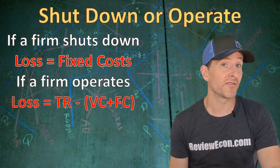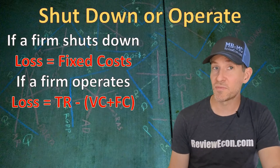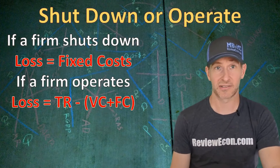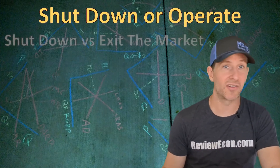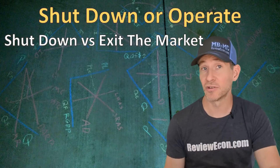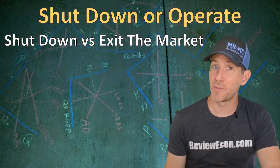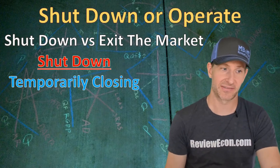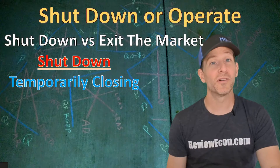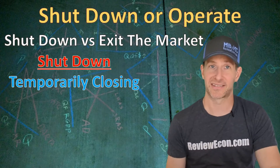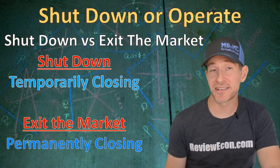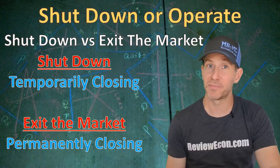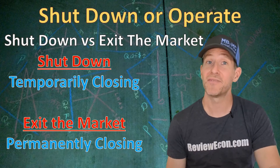But if a firm chooses to operate while suffering an economic loss, their loss will be equal to their total revenue minus their variable costs plus fixed costs. When I talk about shutting down, I'm not talking about the firm exiting the market and closing down permanently. In microeconomics, when we say shut down, we are talking about a temporary closing of the business. Any business that isn't open 24 hours a day will find themselves shut down at some hours. If a firm exits the market, on the other hand, they are going to be permanently closed — not producing any output in the short run or the long run.